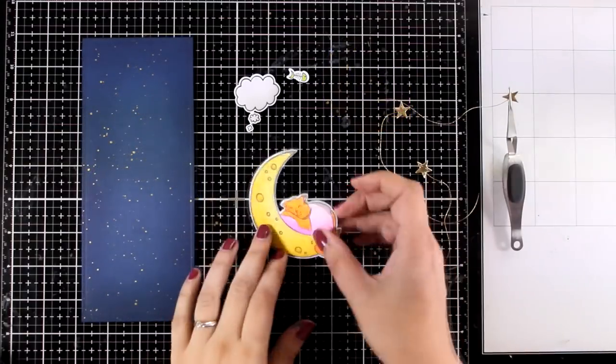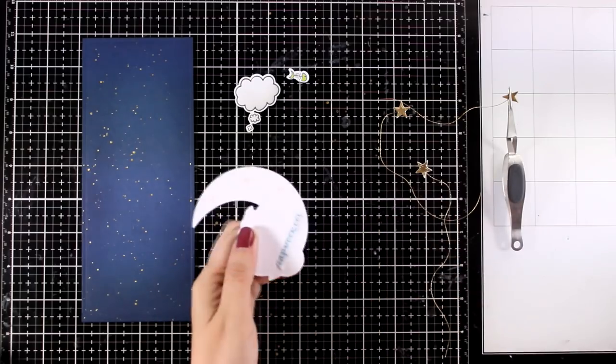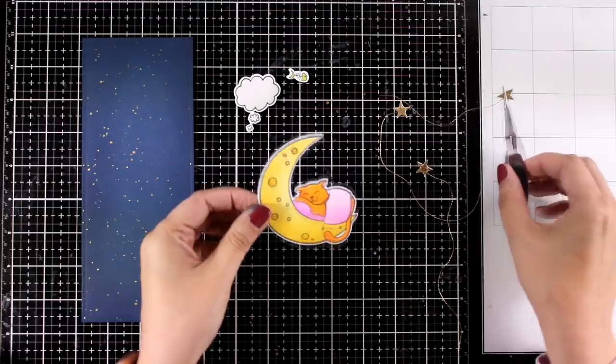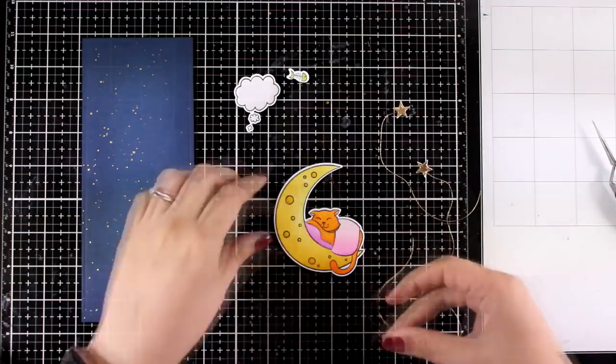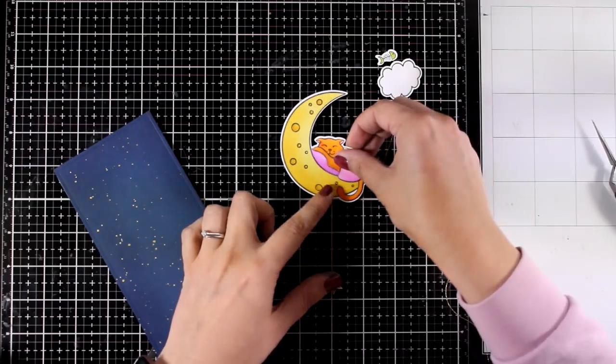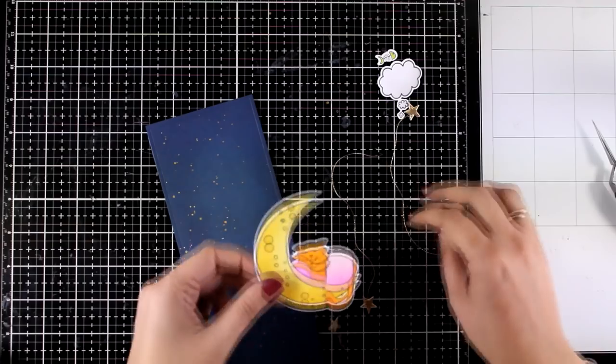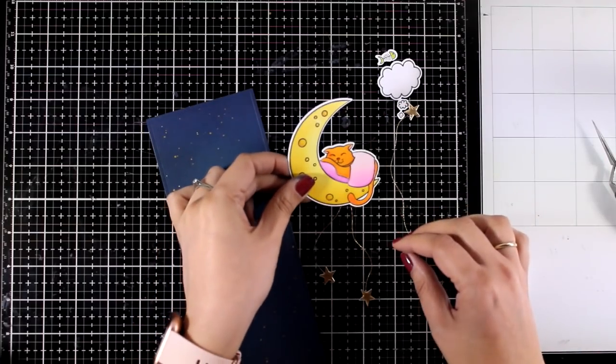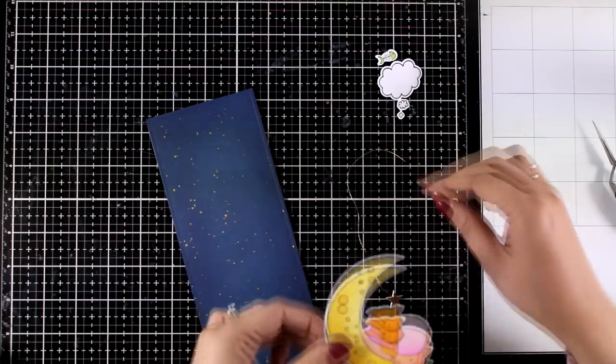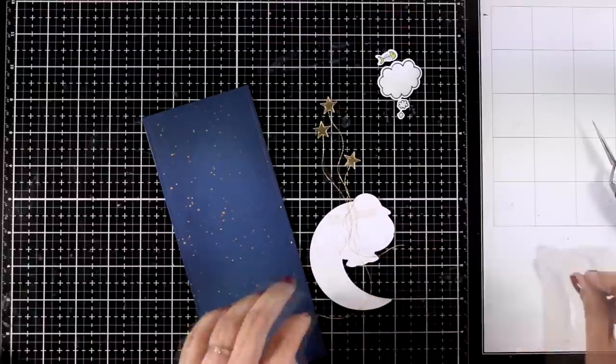At the back of my die cut moon I am going to add a piece of double sided tape. I will peel that off and this is where I will secure the three dangling stars. You can spread them around if you want. I wanted to have all three of them close to each other and I am also making sure that they are not going to end up at the same height. This is going to add more interest on the card.